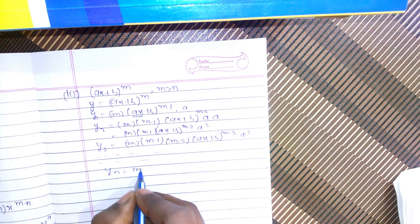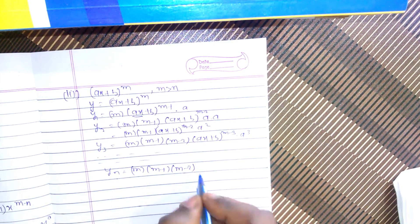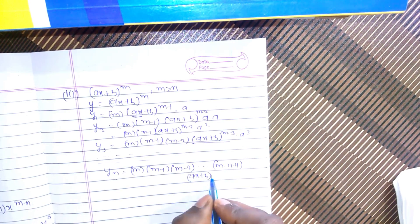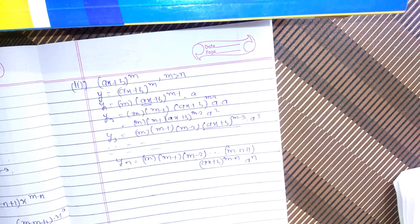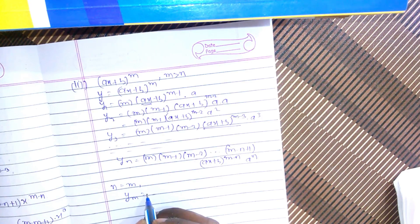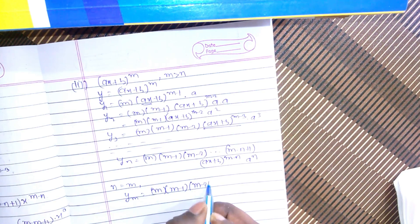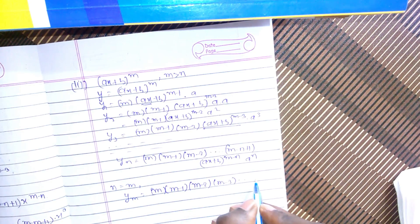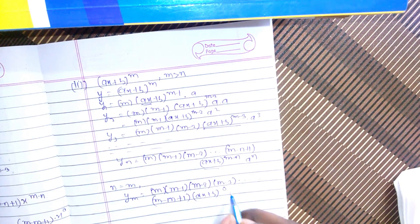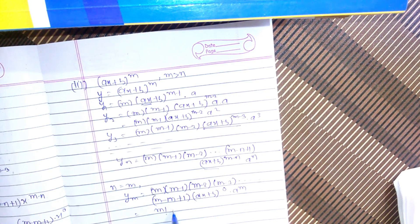Generalizing, yn equals m(m−1)(m−2)...(m−n+1) times (ax+b)^(m−n) times a^n. Again putting n equal to m, we obtain ym equals m(m−1)(m−2)...(m−n)...(m+1) times (ax+b)^0 times a^m, which equals m! · a^m.